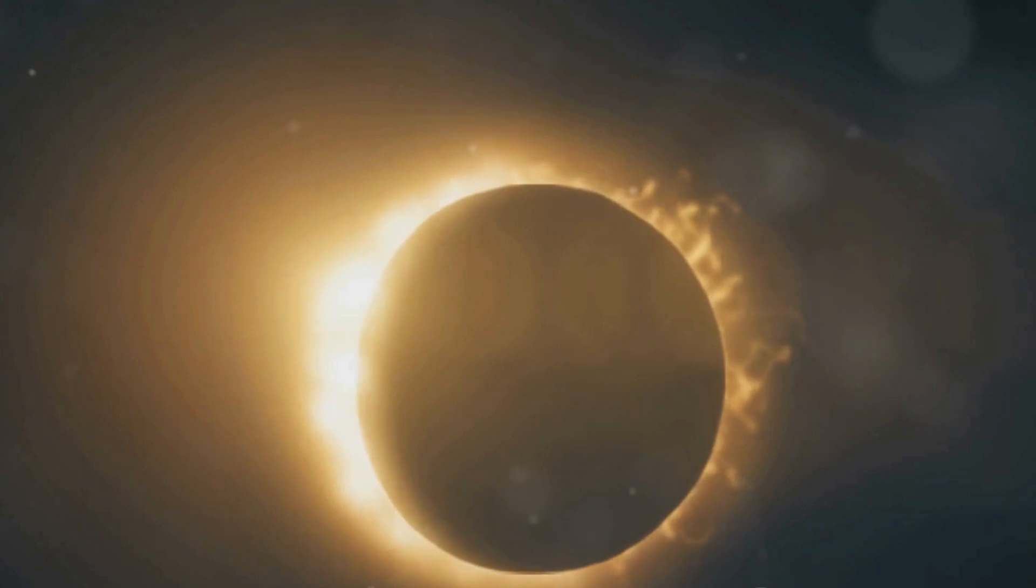Here the moons are too small to fully cover the sun. So you'd witness a unique sight, an annular or ring of fire eclipse. It's a sight that's as breathtaking as it is unique, a testament to the diverse beauty of our solar system.